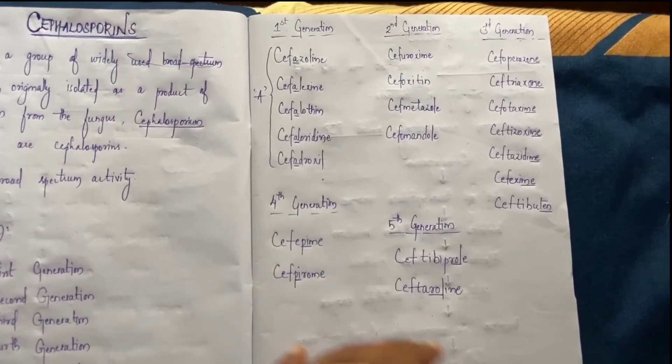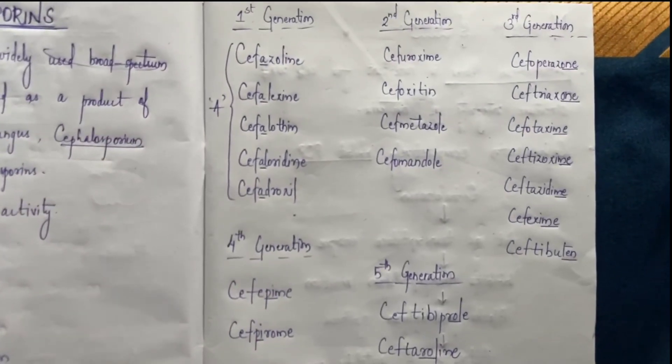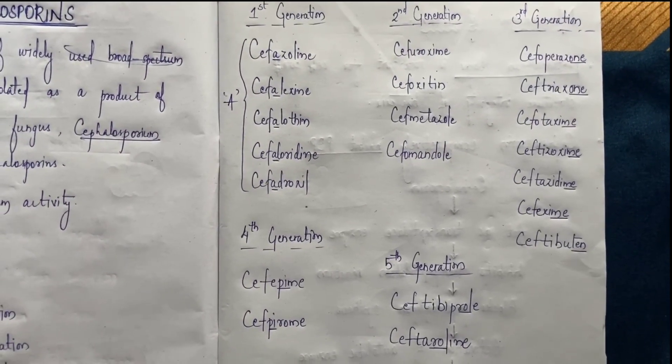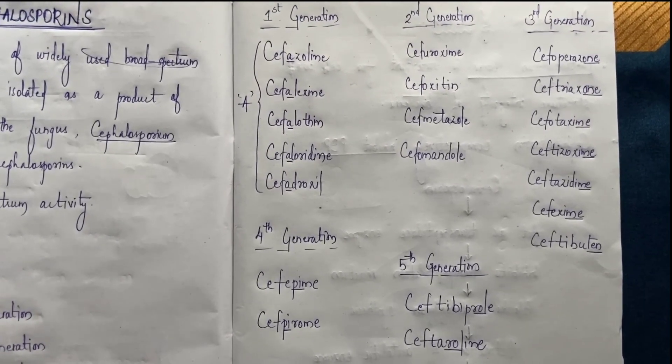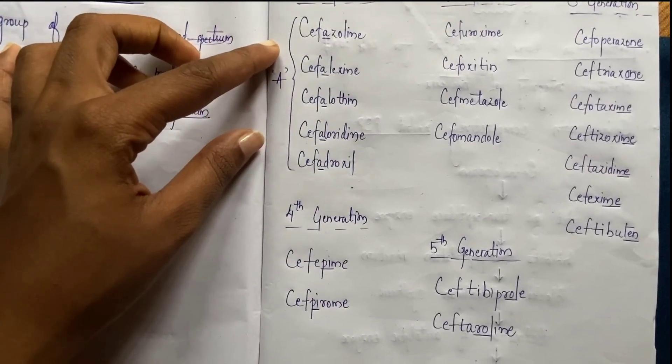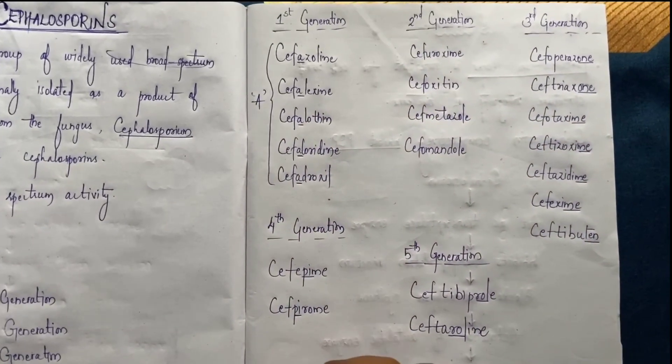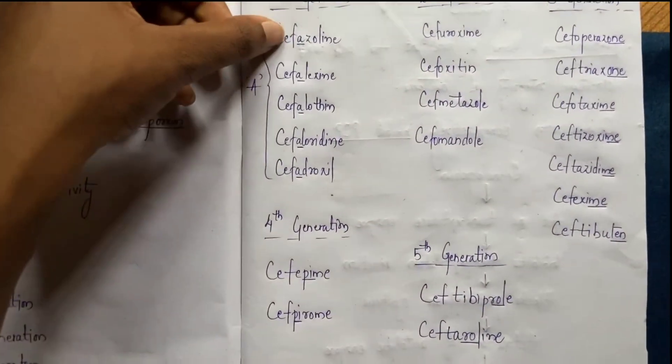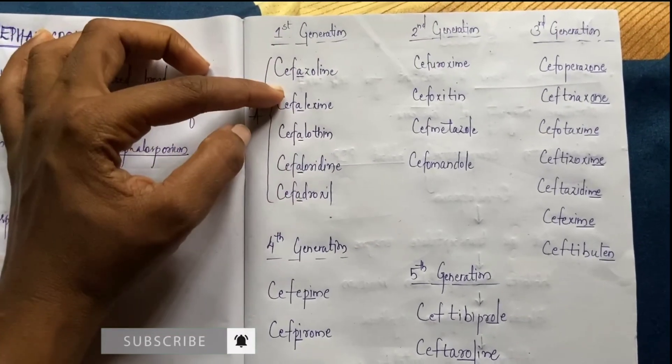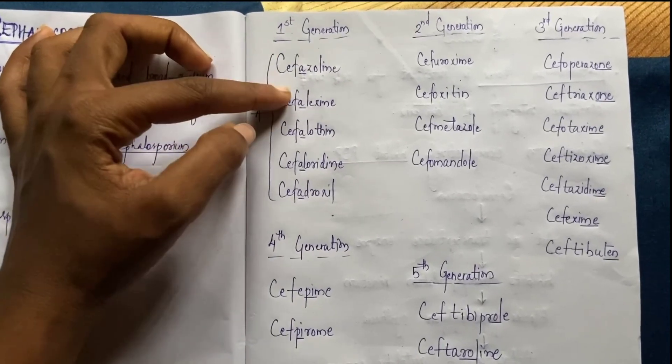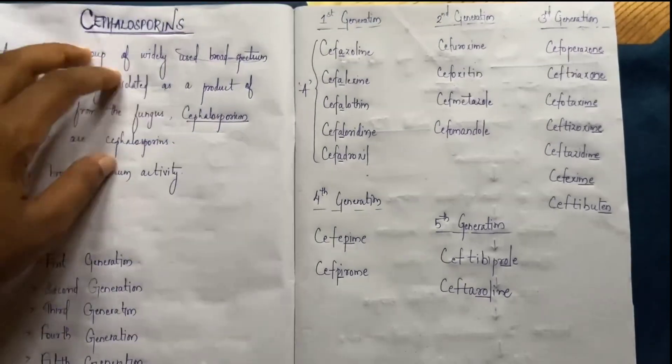Let's see first generation. The examples are Cephazolin, Cephalexin, Cephalothin, Cephaloridin, and Cephalodroxil. If it starts with Ceph and after that A comes, that is the clue for first generation. Any medicine that starts with Ceph and after that A comes, that is first generation Cephalosporins.